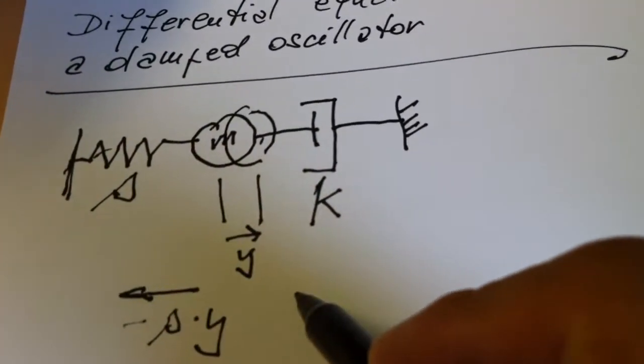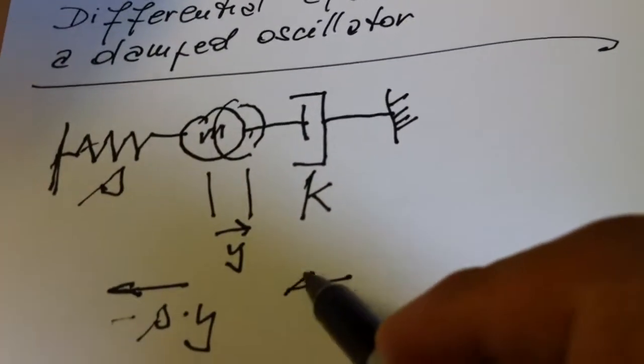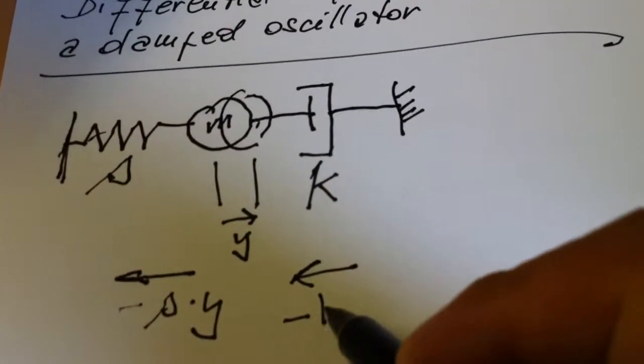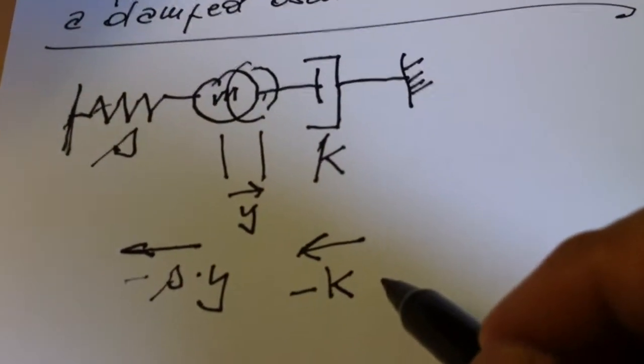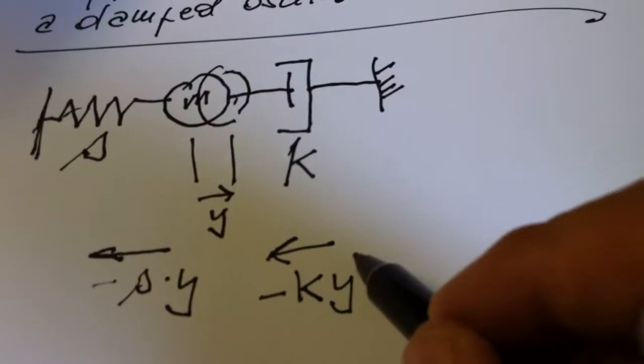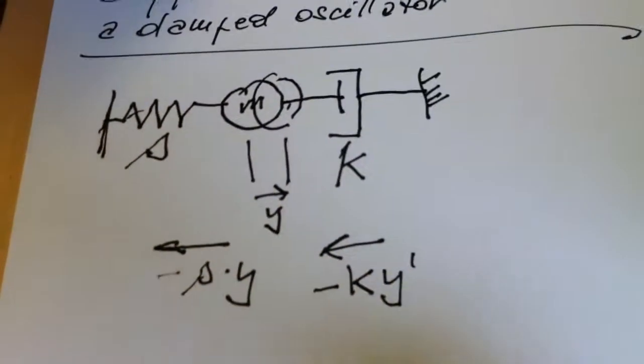And also the damping system will resist the movement with a force which is proportional to the speed and to the velocity of the movement. And the velocity, as we well know, is the first derivative of the position.